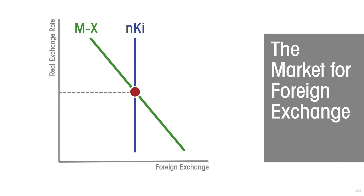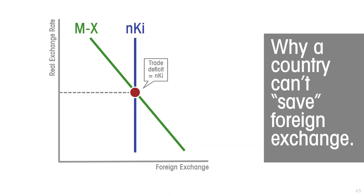Representing the foreign exchange market in this way allows us to explain why a country can't ever save foreign exchange. In popular discourse about trade policy, from time to time you hear that somebody will promote an economic policy because it will save the country foreign exchange. For example, people will sometimes promote an import substitution policy because it saves the country foreign exchange. But with a market-determined exchange rate, as we are representing here, a country cannot save foreign exchange.